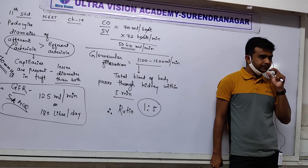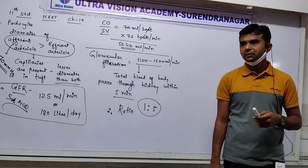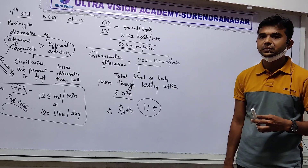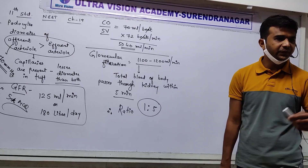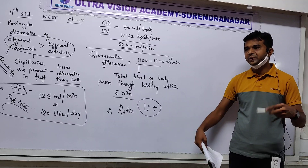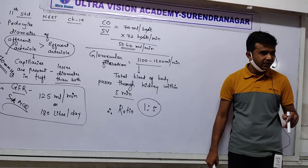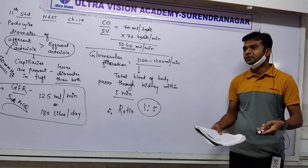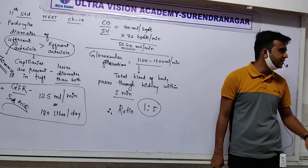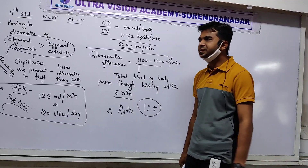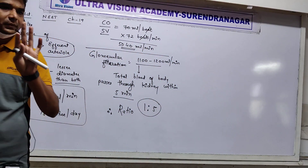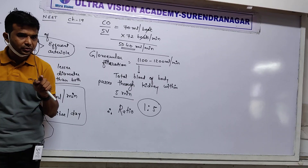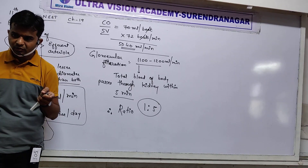100% of glucose is reabsorbed in the PCT (proximal convoluted tubule). In the filtrate, all blood components are filtered, including glucose. In diabetic patients, the PCT is affected, so less absorption of glucose occurs, glucose is present in urine, causing glycosuria.